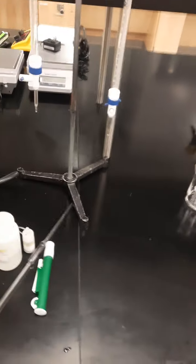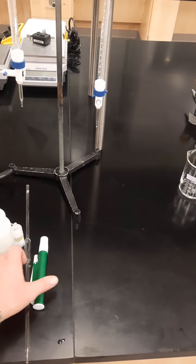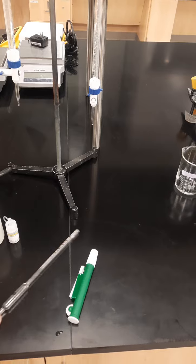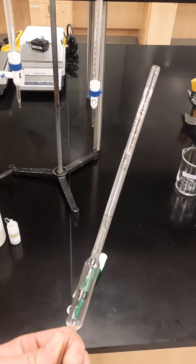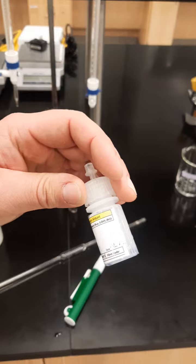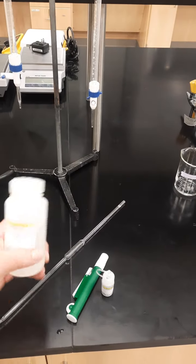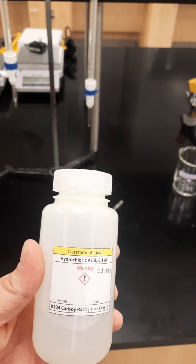These are things you need from the cart: you need to get a pipetter, a 10 milliliter pipette, a dropper bottle of bromothymol blue, and the hydrochloric acid solution.